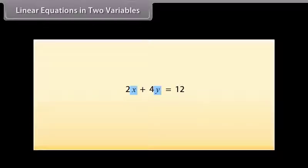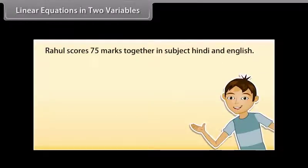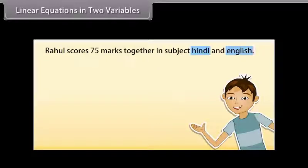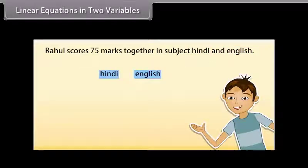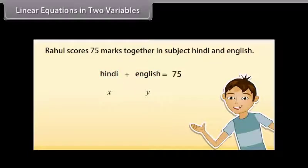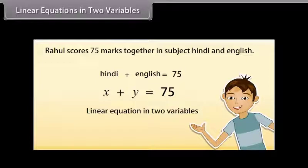Let's take an example. Rahul scores 75 marks together in subject Hindi and English. Now how can we express this information in the form of an equation? Here you can see that the marks of neither of the subjects are known — that is, there are two unknown quantities. Let us use X and Y to denote them. So, the marks scored in Hindi is X and the marks scored in English is Y. So, X plus Y is equal to 75 is the required equation. This is an example of a linear equation in two variables.